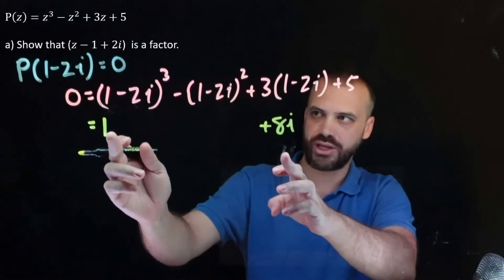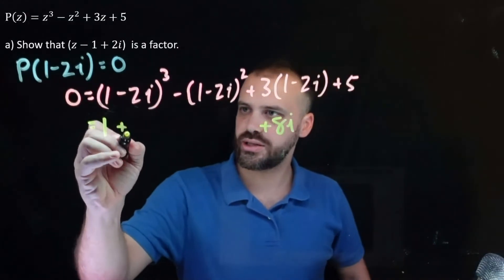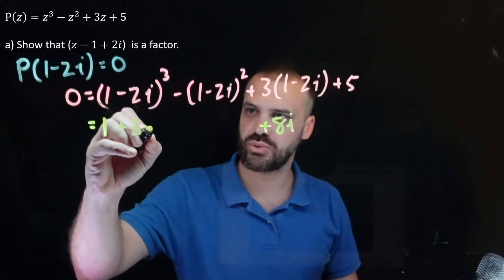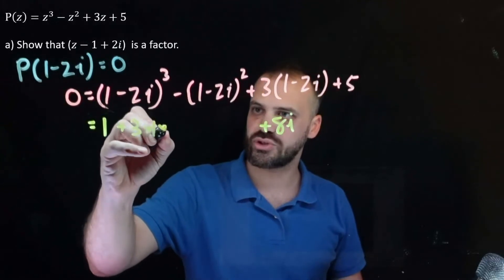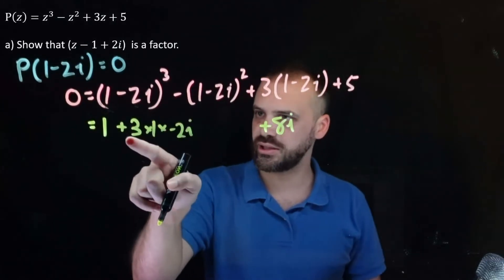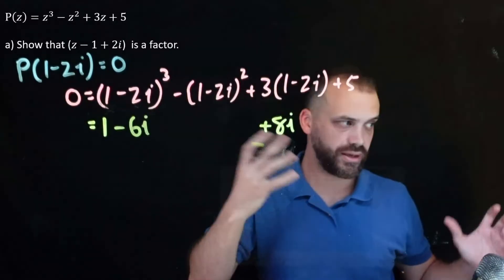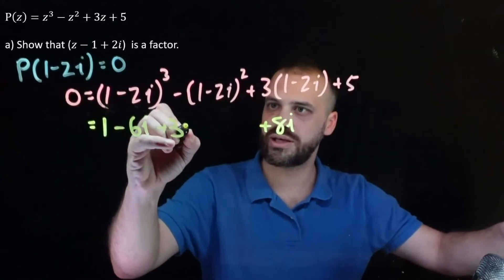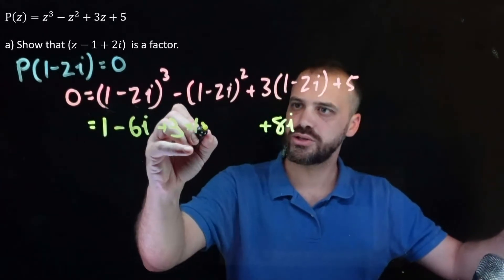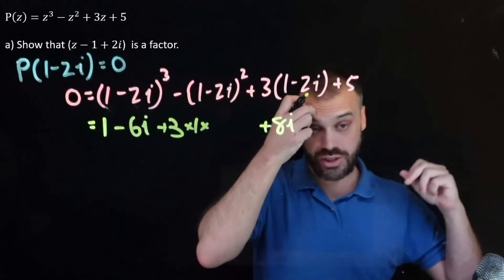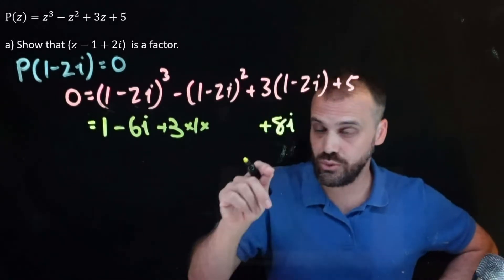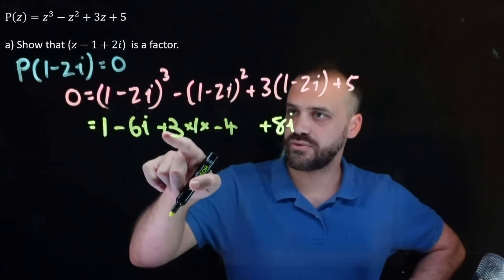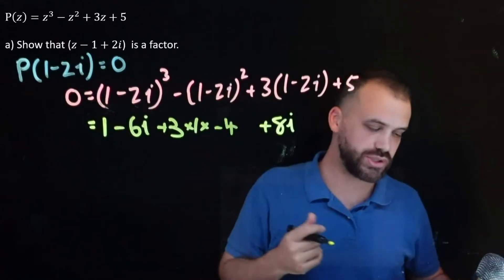So there are our bookend terms. The next term is 3 times the first term squared — 3 times 1 squared, which is 1, times negative 2i — that gives us negative 6i. The last term is positive 3 times 1 times negative 2i squared. Negative 2 squared is 4, i squared is negative 1, so times negative 4. We have 3 times 1 times negative 4, which is negative 12.